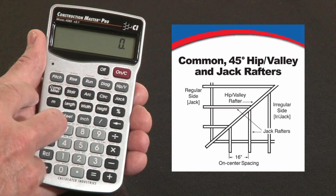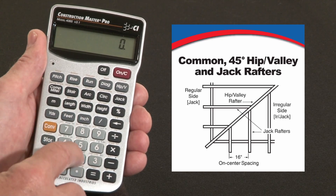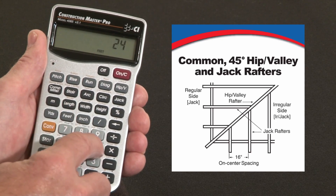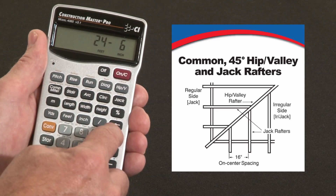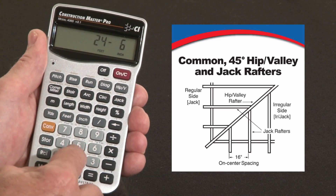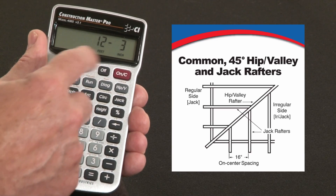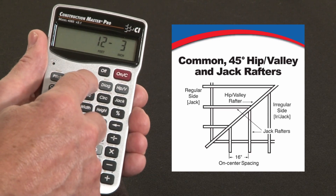In this case, let's say our building has a 24 foot 6 inch span. So we'll enter that — 24 feet, 6 inches — and divide that by 2. That gives us our run: 12 foot 3 inches. I'll enter that as run.